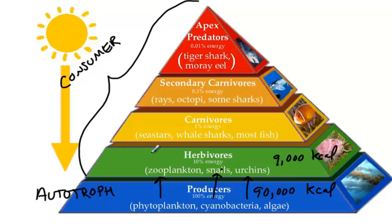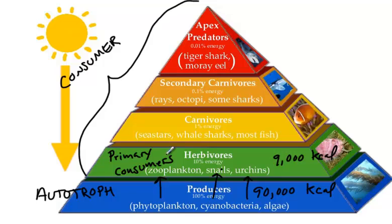We call these consumers. Since these are the first consumers, we call these primary consumers. As we move further up, we start getting into carnivores. Carnivores also cannot make their own food like producers can, so what they do is eat other consumers. These consumers — sea stars, whale sharks, and most of the fish in the ocean — are going to be eating primary consumers and each other. So the secondary carnivores and these carnivores are all consuming one another.